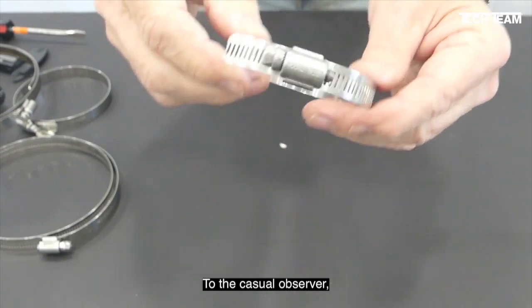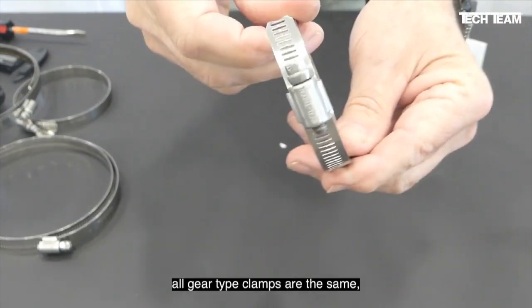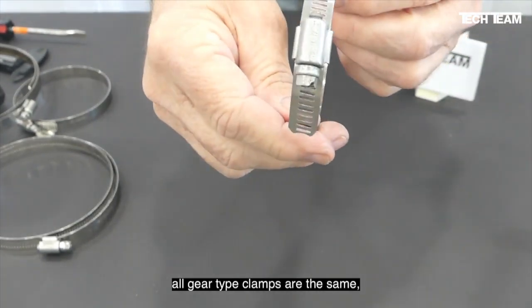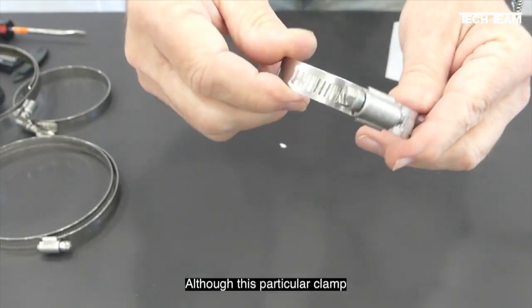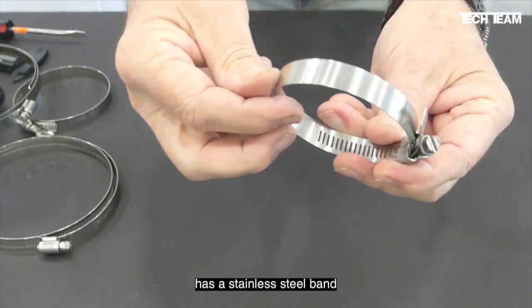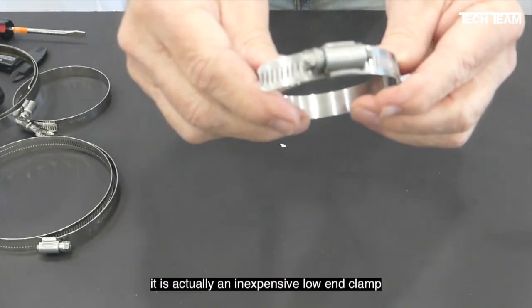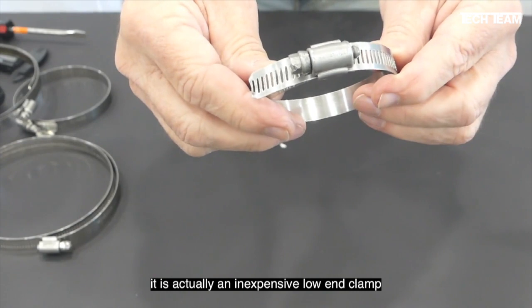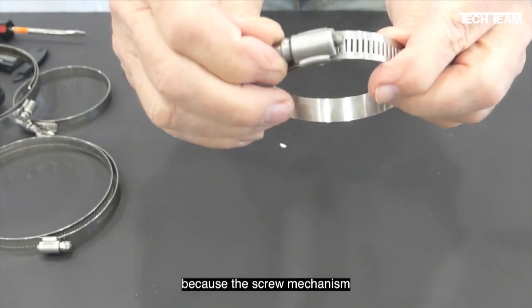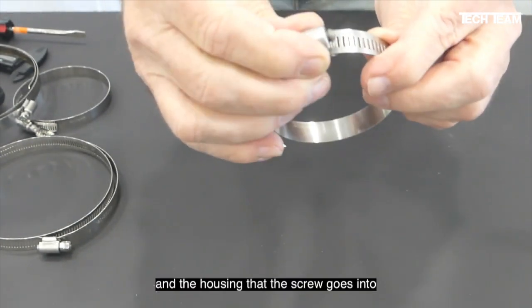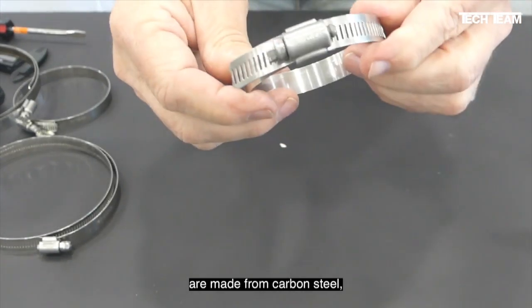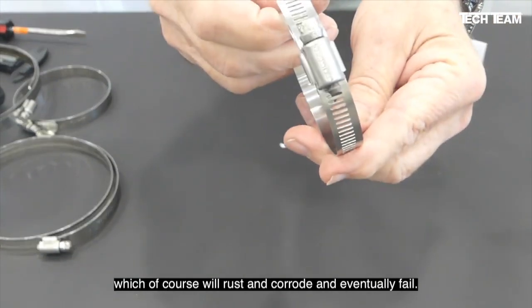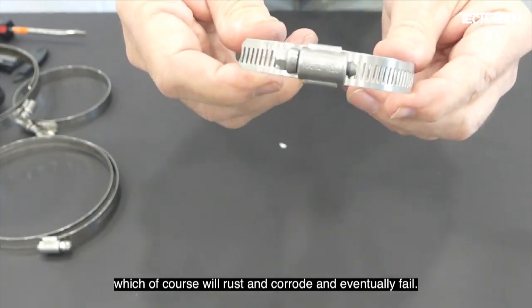To the casual observer, all gear type clamps are the same. But actually, that's pretty far from the truth. Although this particular clamp has a stainless steel band, it's actually an inexpensive low-end clamp because the screw mechanism and the housing that the screw goes into are made from carbon steel, which of course will rust and corrode and eventually fail.